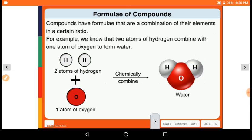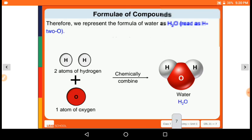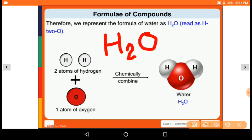Compounds have formulas that show the combination of their elements in a certain ratio. For example, we know that two atoms of hydrogen combined with one atom of oxygen form water. So how we can write this in symbolic language? Therefore, we represent the formula of water as H2O. We can read it as two hydrogen and one oxygen. So we can write capital H, small 2, and capital O. So it is H2O, the formula of water.